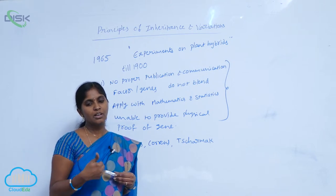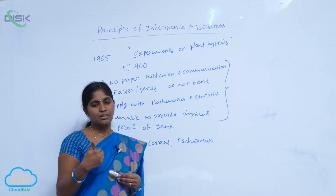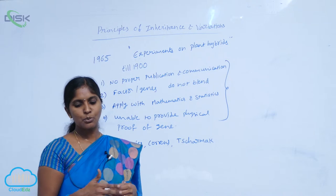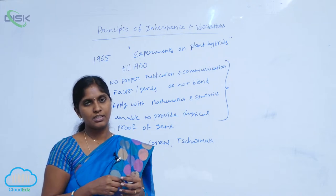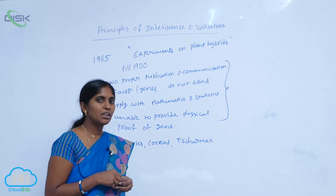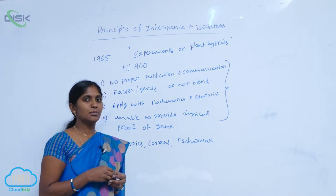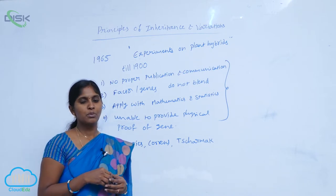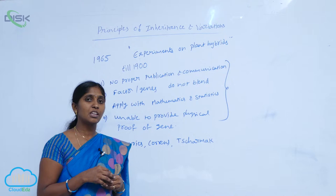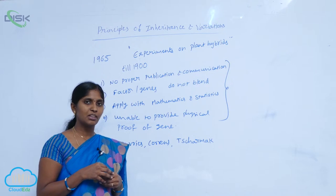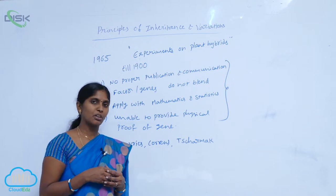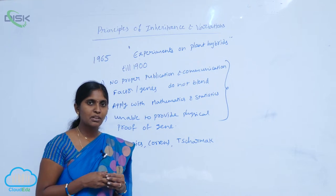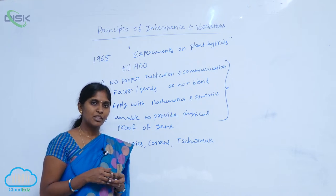The chromosomal theory of inheritance is the combination of Mendelian principles as well as chromosomal behavior. They postulated the chromosomal theory of inheritance, but the experimental proof of the chromosomal theory of inheritance was given by scientist T.H. Morgan — Thomas Hunt Morgan — who conducted experiments on the fruit fly, Drosophila.